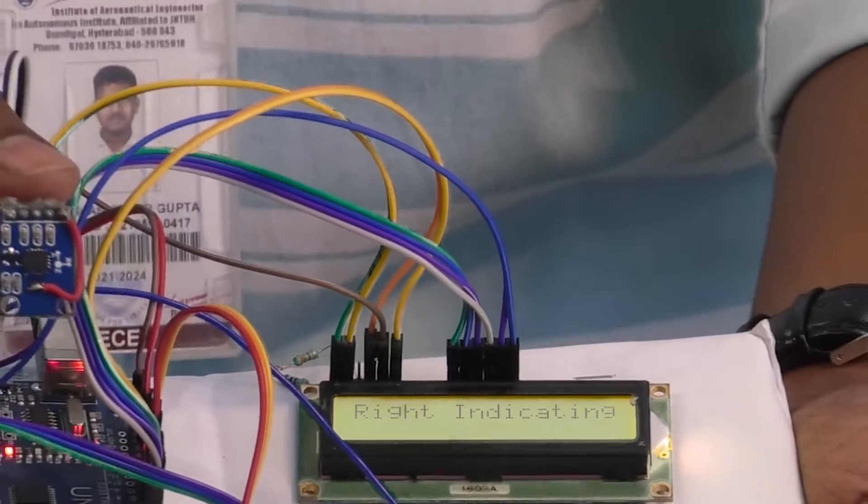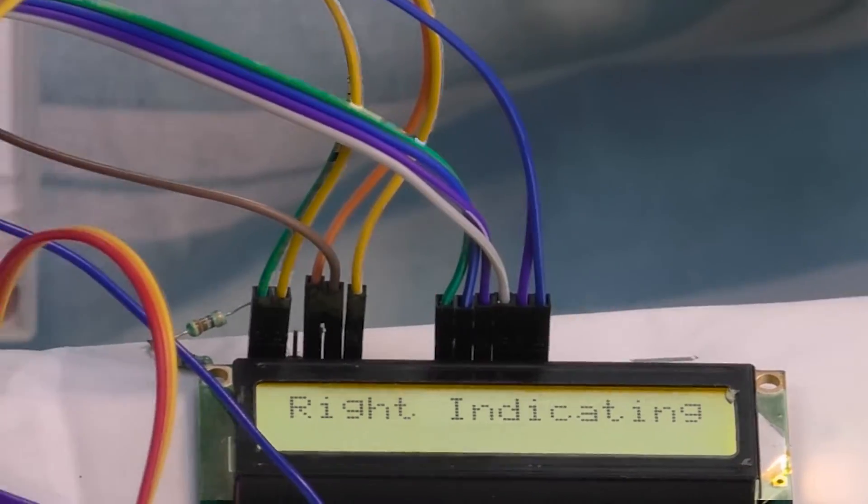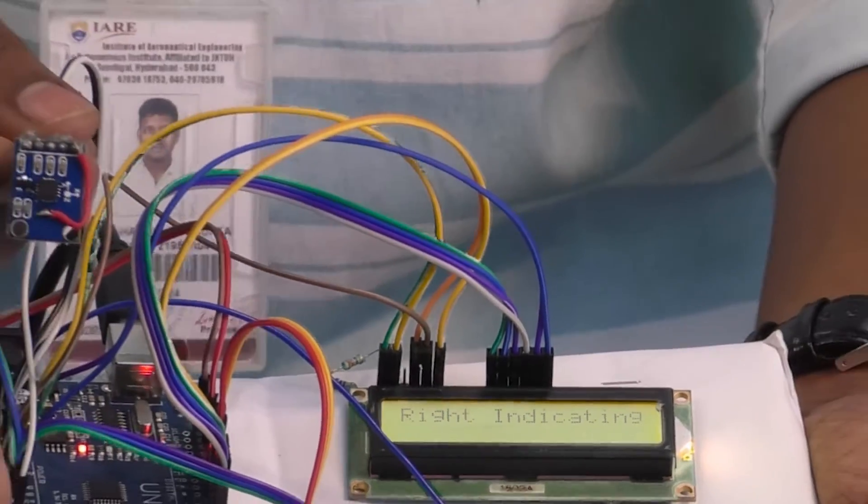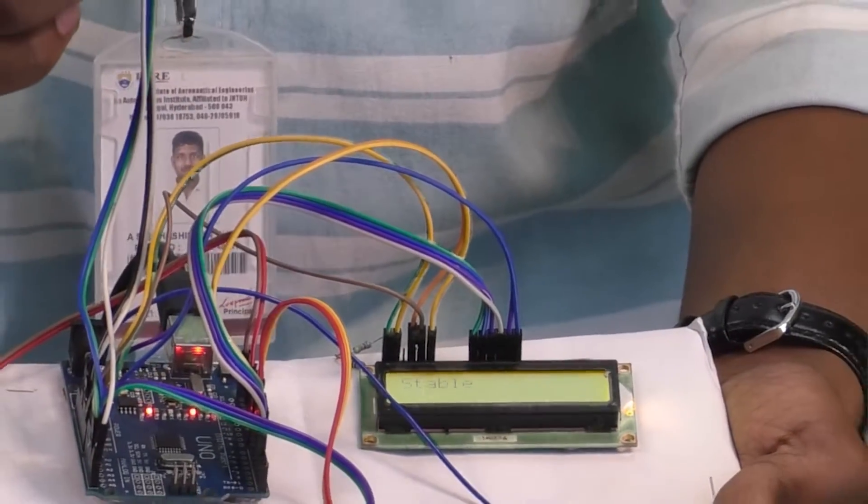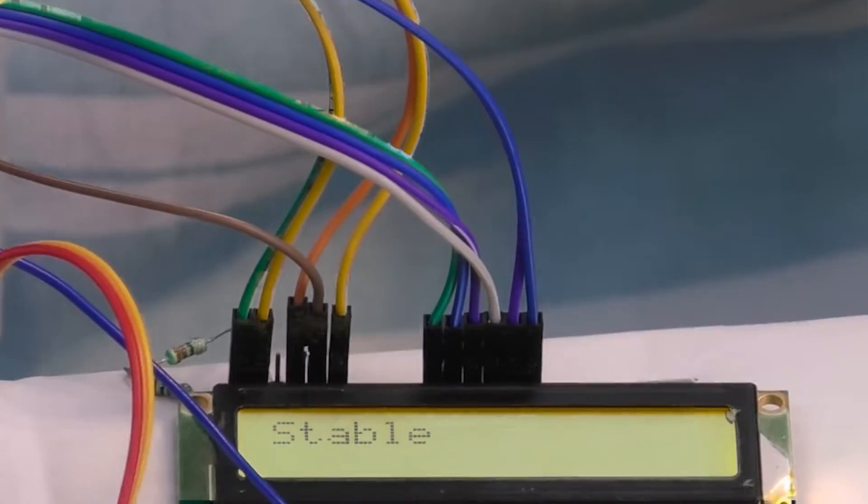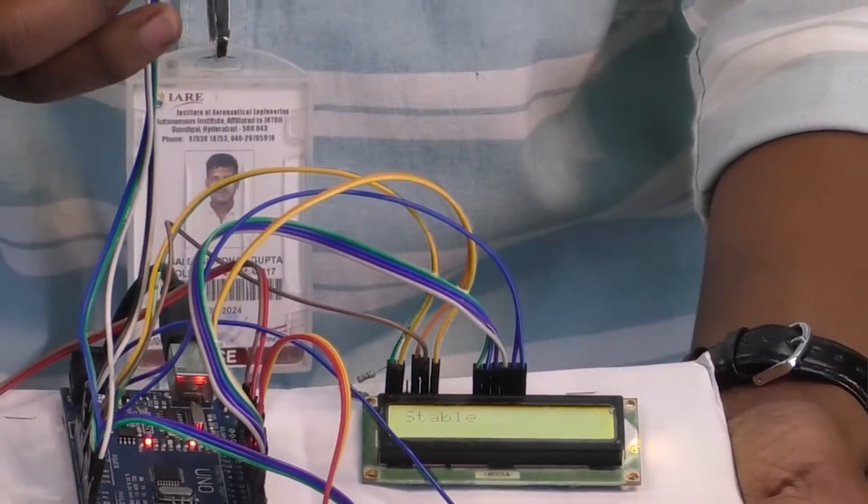So whenever we are moving to the right, the right indicator gets activated automatically and the buzzer produces noise and the LCD displays the right indication. When it comes to the center position it indicates that a stable state and there is no noise from the buzzer.